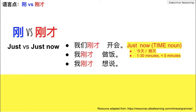On the other hand, when negating something that didn't happen just now, we use only 刚才. 我们刚才没开会 — We did not have a meeting just now. 我刚才没做饭 — I did not cook just now. 我刚才不想说 — I did not want to talk just now.